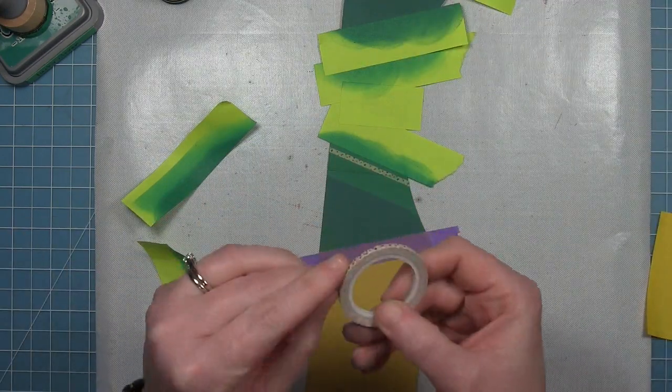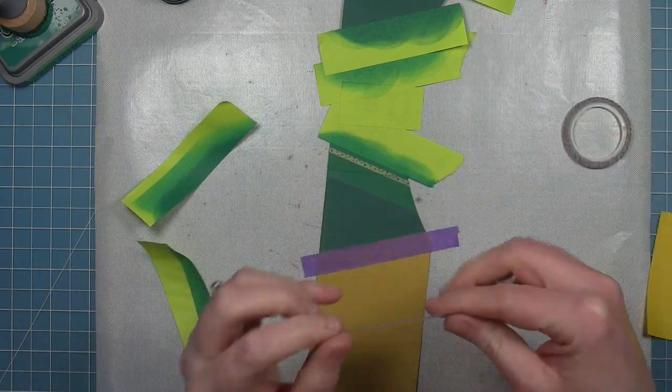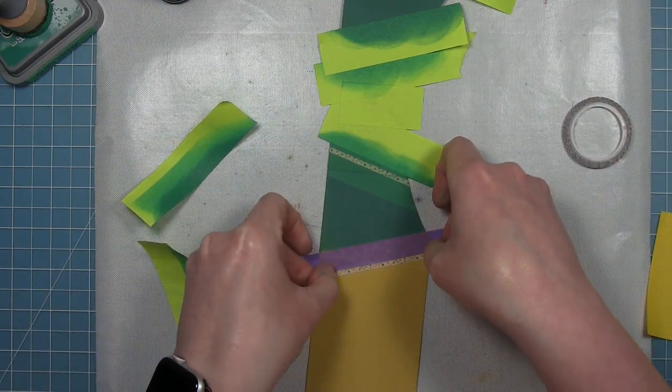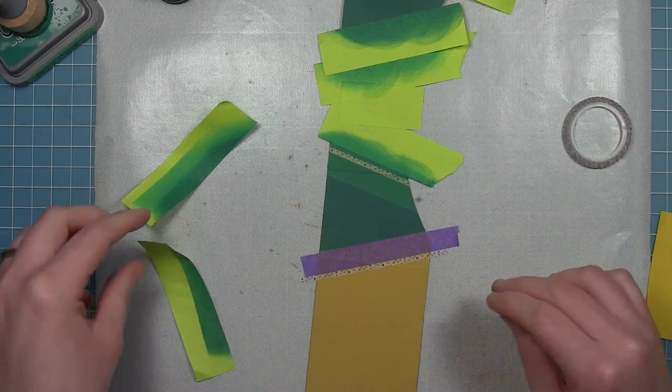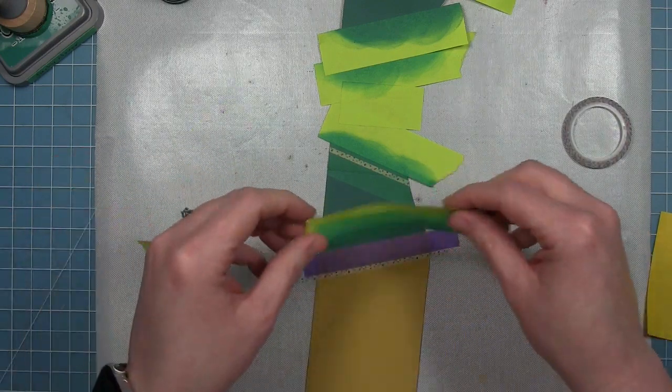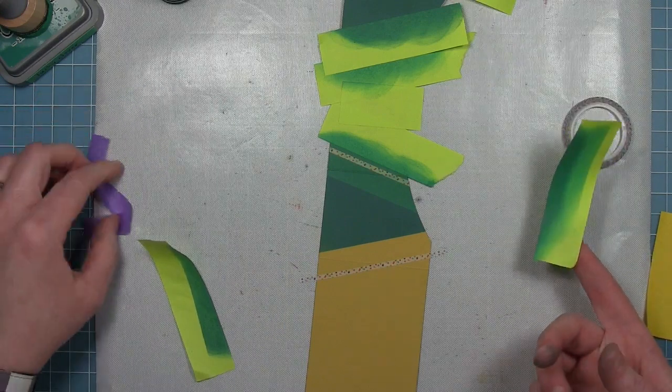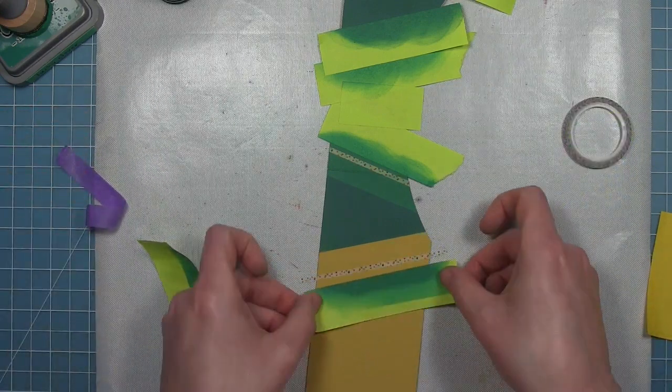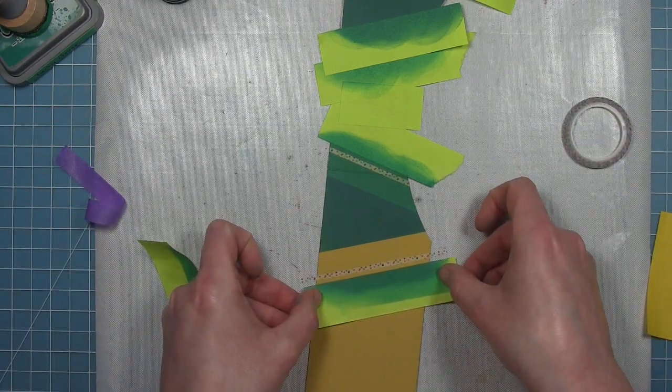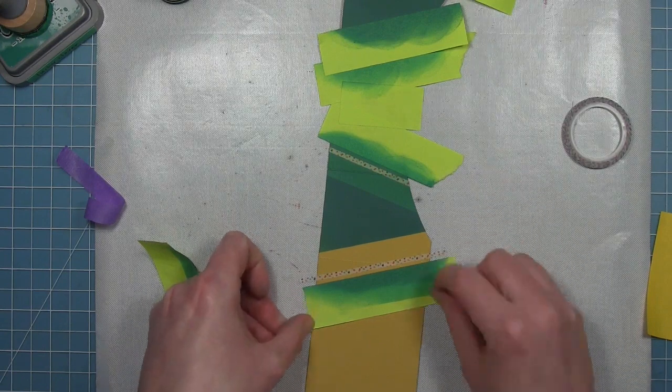Again, here I'm using my purple tape as my guide for the width. So now you can see I'm going to make the Lucky Clover stripe on the other side of that dark green. And you can see that if I use my purple tape, then the width is going to be consistent.